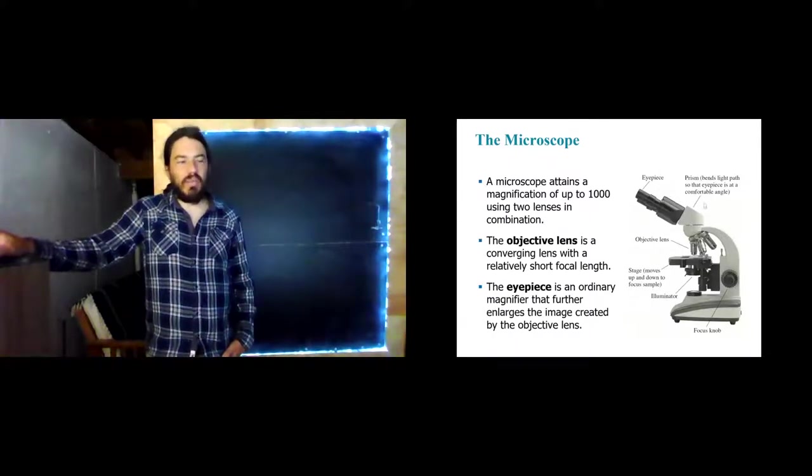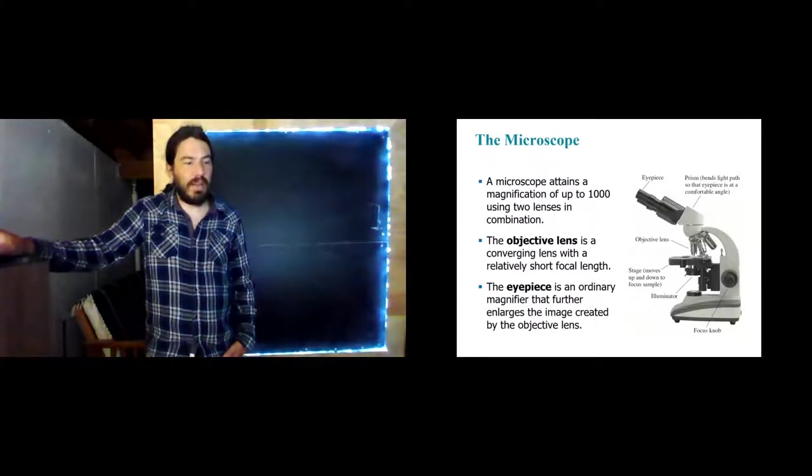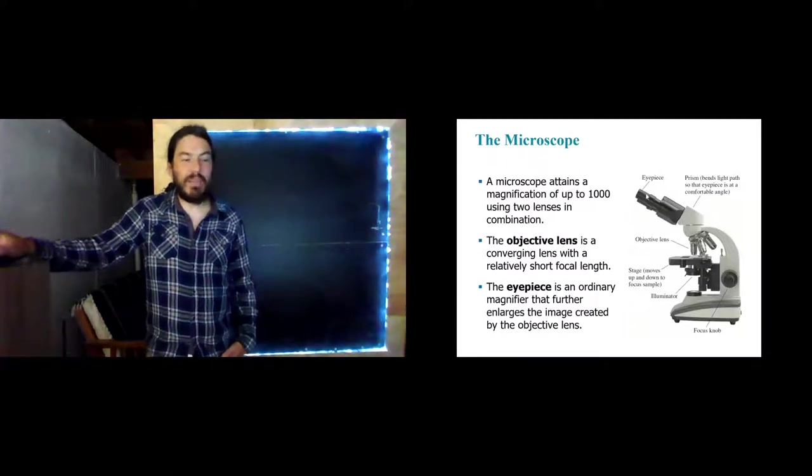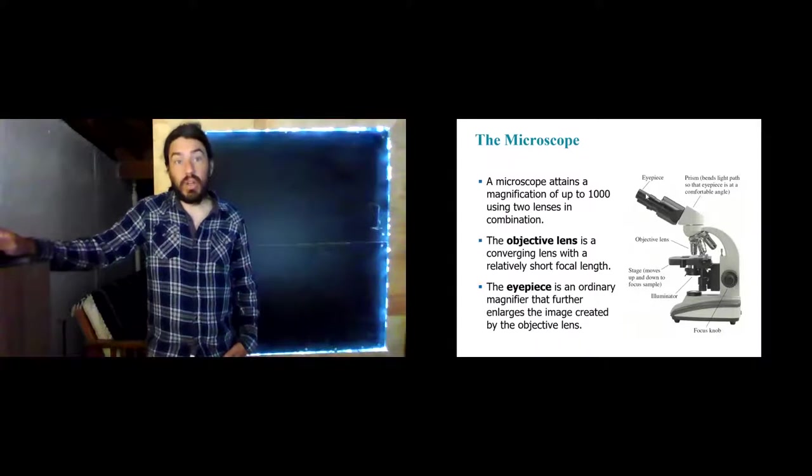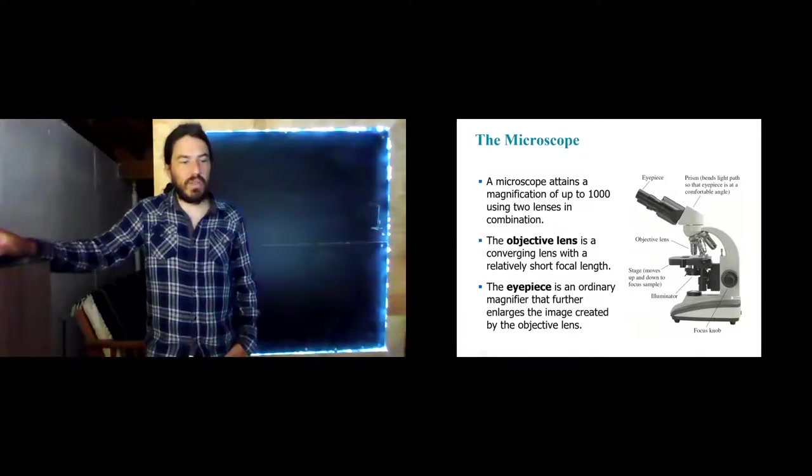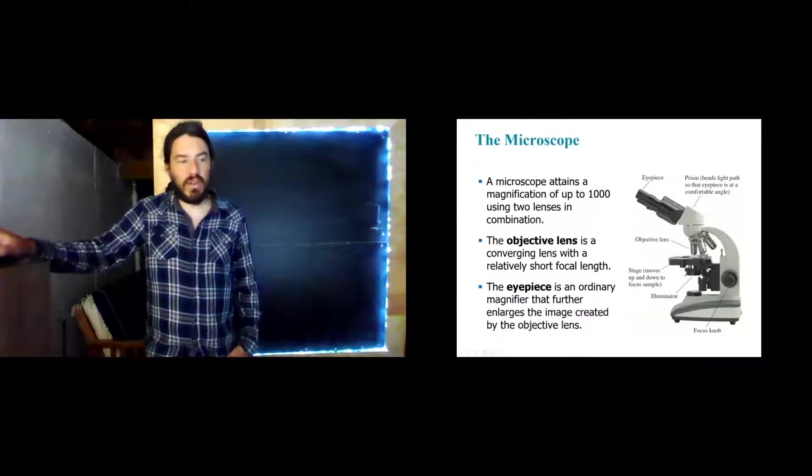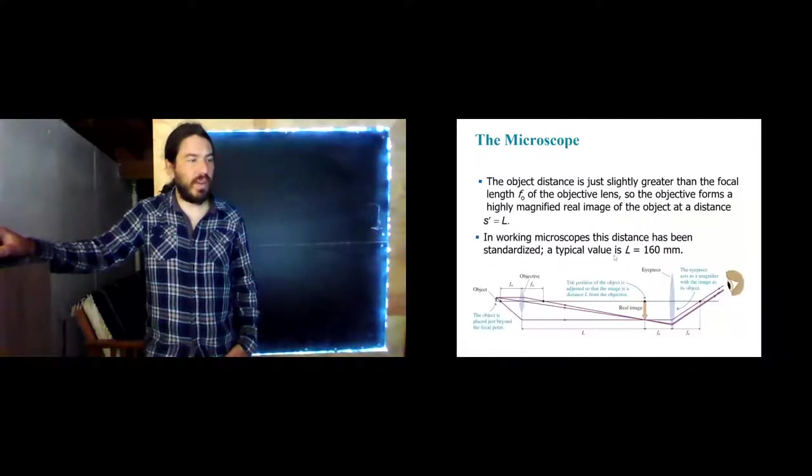But it basically just bends the light. So really, we're going to kind of ignore this from here on out. And we're going to talk about how the objective lens works together with the eyepiece in order to create a very large image. If we need to focus, we use the focus knob. And that doesn't actually change the optical path at all. What it changes is where the sample is. So it actually moves the sample stage up and down. And that's how we achieve a focus.